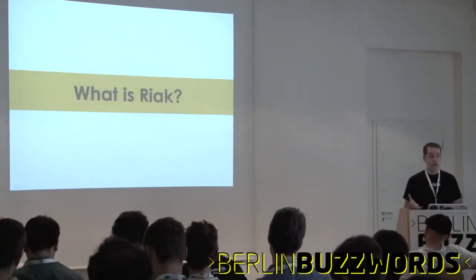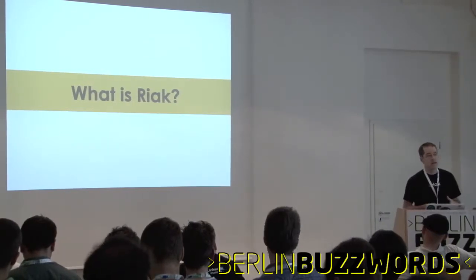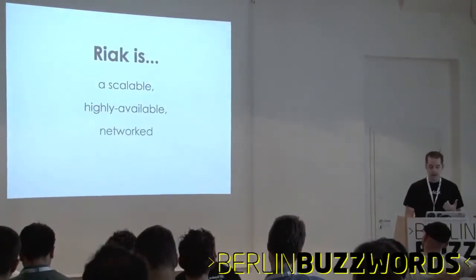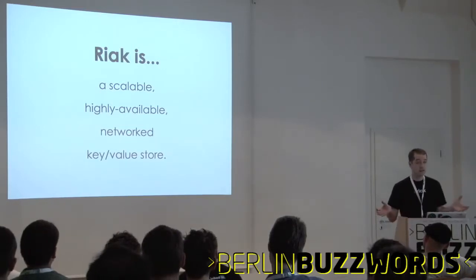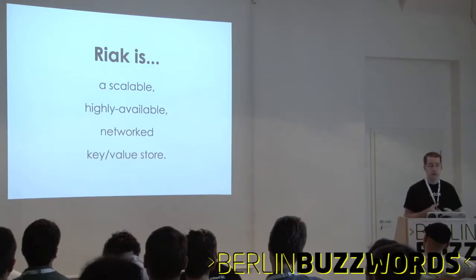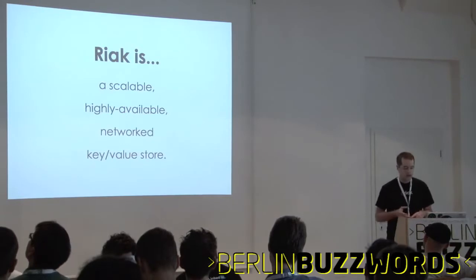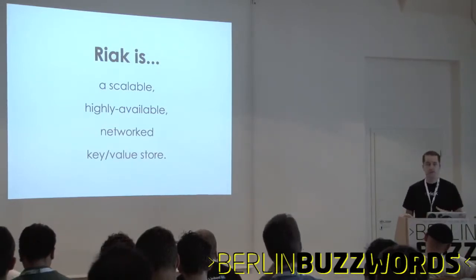Let's take a look at what Riak is very briefly, and then we'll talk about MapReduce and how you can use MapReduce in Riak. Riak is a scalable, highly available networked key-value store. Scalable means it scales linearly as you add nodes. Highly available focuses on fault tolerance and being able to accept writes at all times. Networked means it operates across a number of nodes. Its primary data model is storing values under keys.